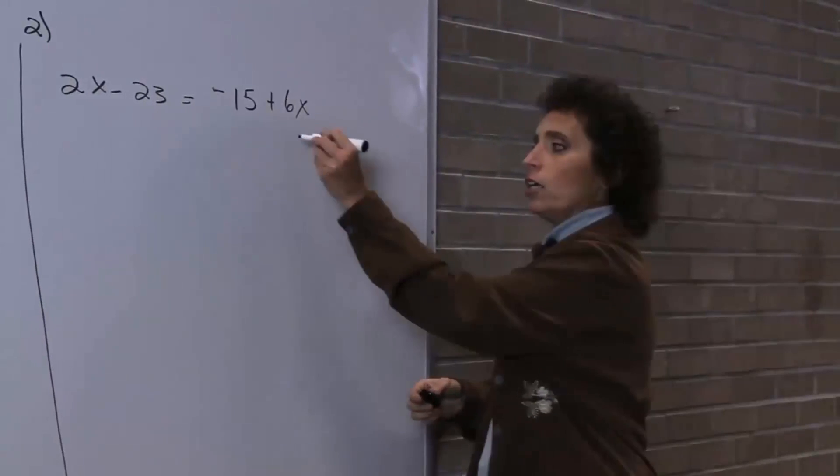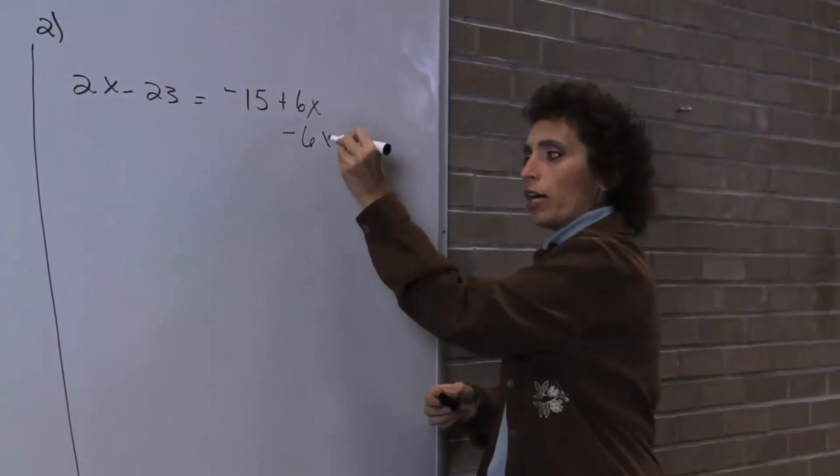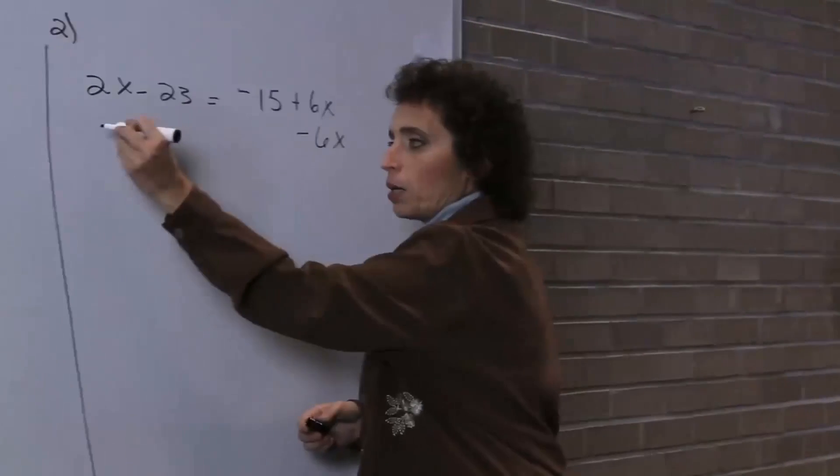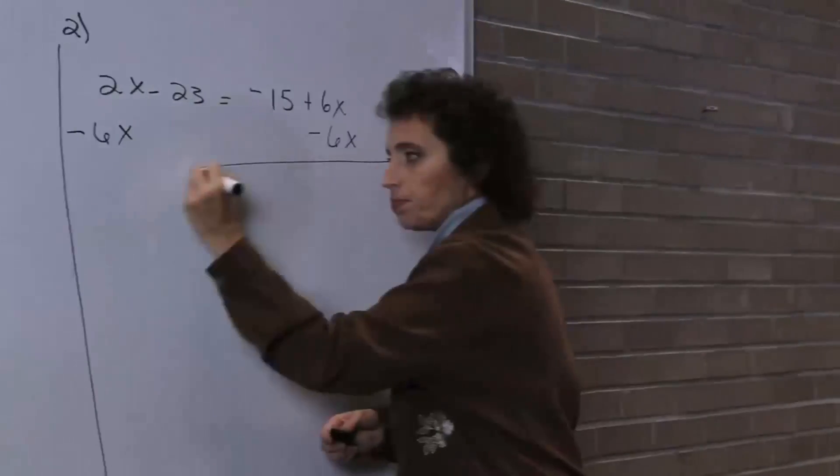It doesn't matter which side you get the variable to, and it doesn't matter which side you get the number to, as long as you get them to opposite sides. However, because later on in the course you'll be solving inequalities, it actually is easier to get the variables to the left. So I'm going to get all the variables to the left and start here.